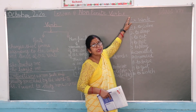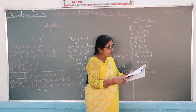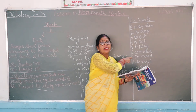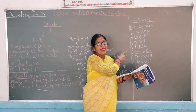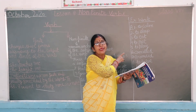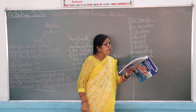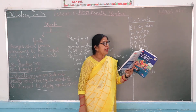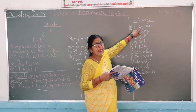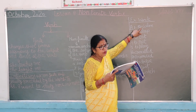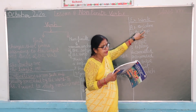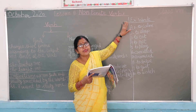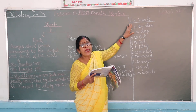Today I will be covering Exercise A, page number 14. I will read the sentences and identify the non-finite verb. The first sentence is: 'The noisy crowd appeared to come.' The answer here is 'to come.' This exercise is to be completed in your book.